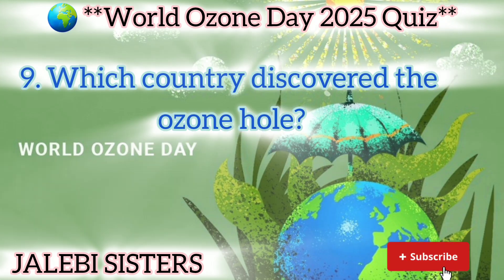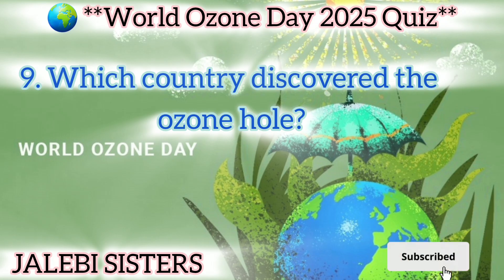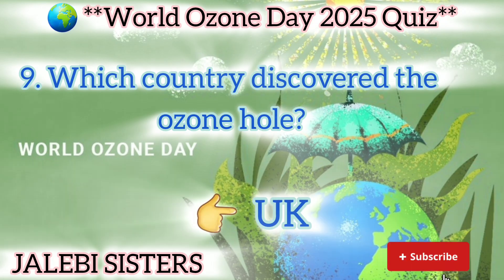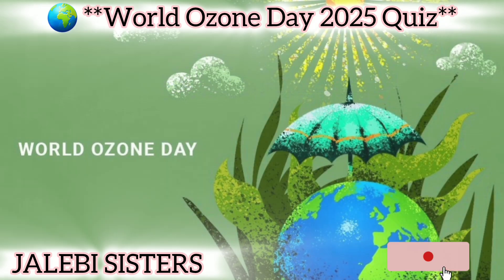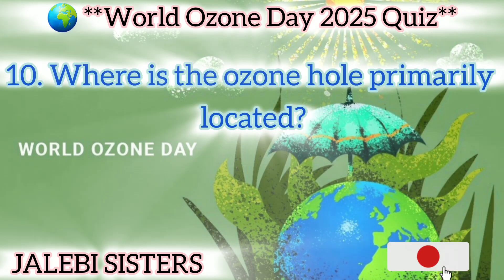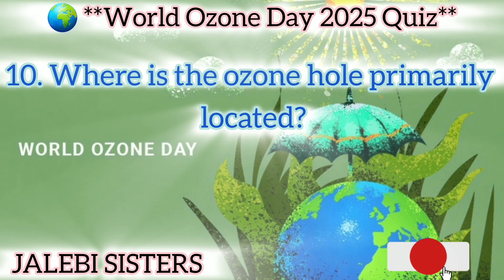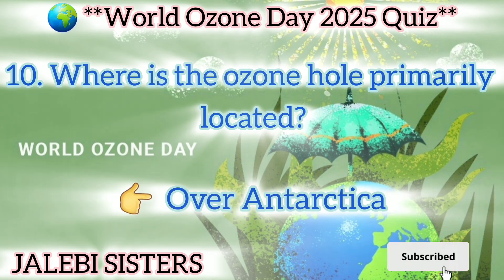Ninth question: Which country discovered the ozone hole? Answer: UK. Tenth question: Where is the ozone hole primarily located? Answer: Over Antarctica.